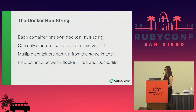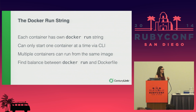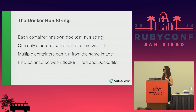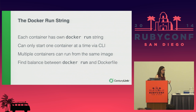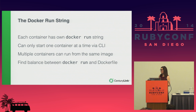A little bit more about the Docker run string: each container has its own, and you can only run one container with one command. Multiple containers can use the same image to run from — you don't need a different image per container. And again, find the balance between the Docker run string and the Dockerfile for configuration so you're not exposing anything that shouldn't be exposed. But you have to do this whole configuration business every time you run a container, and I'm really lazy — that's why I became an engineer.